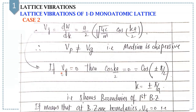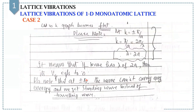Suppose we have zero group velocity. In that case this term goes to zero, and zero can be written as cos(±π/2). By this expression we simply get K equals ±π/A. This shows the boundaries of the first Brillouin zone — it means that at Brillouin zone boundaries, group velocity is zero. And the omega versus K graph becomes flat at those boundaries. Please note: whenever K equals ±π/A, that gives us lambda equals 2A, so a wave with wavelength 2A will have group velocity equal to zero.